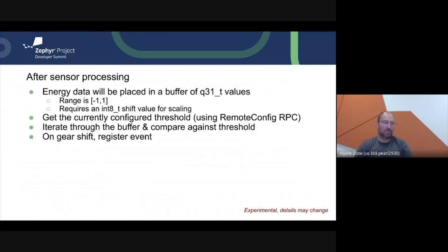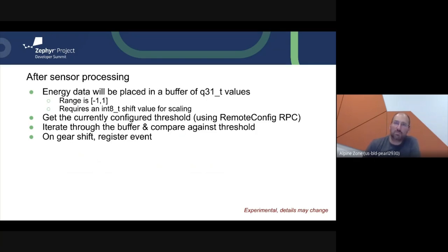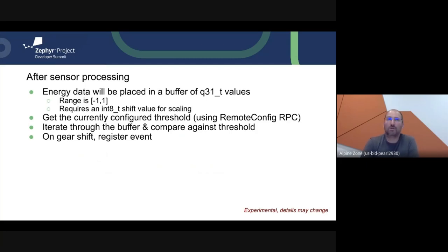The actual core application logic involves a little bit of math. We put things into a buffer of Q31 values. If you're not familiar with Q31 values, I highly suggest checking out the Zephyr DSP digital signal processing library — it makes fixed-point arithmetic much easier. The key thing to know is that Q31 has a range of negative one to one and a bit-shift value for scaling. If the shift is one, the range is multiplied by two; if the shift is two, the range is negative four to four; if the shift is negative one, the range is minus half to half.